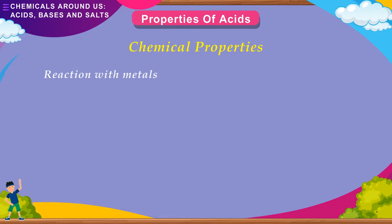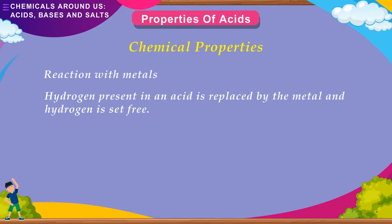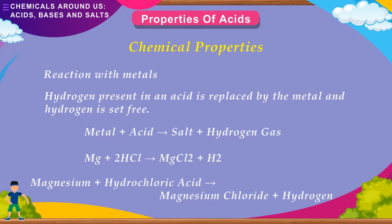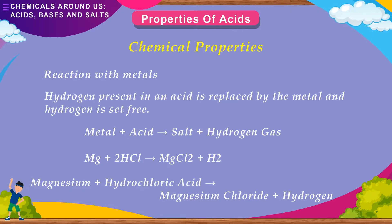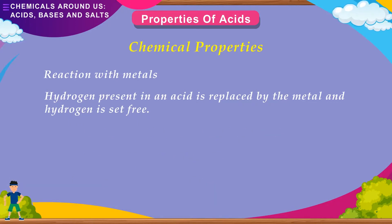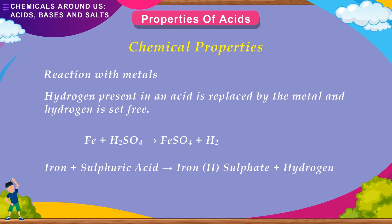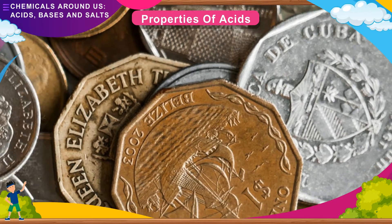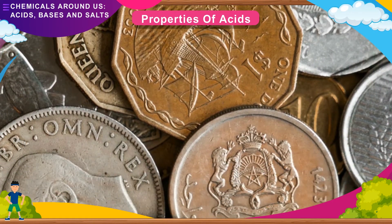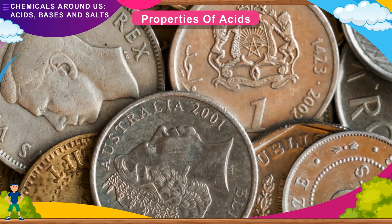Chemical properties. Reaction with metals: Hydrogen present in an acid is replaced by the metal, and hydrogen gas is set free. Metal + Acid → Salt + Hydrogen gas. For example: Mg + 2HCl → MgCl₂ + H₂ (Magnesium + hydrochloric acid → magnesium chloride + hydrogen). Fe + H₂SO₄ → FeSO₄ + H₂ (Iron + sulfuric acid → iron(II) sulfate + hydrogen). Less reactive metals like copper, silver, and gold cannot replace hydrogen from acids.